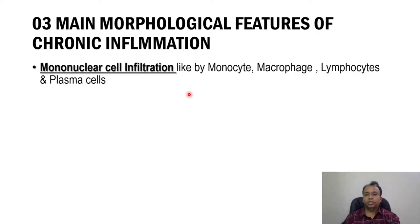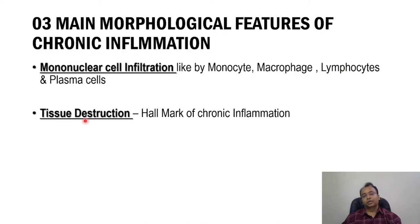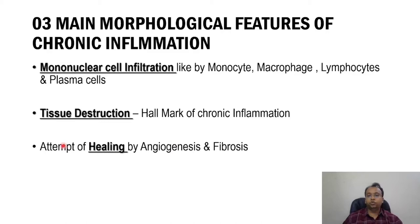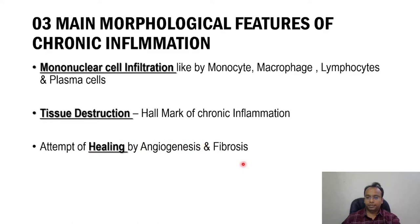Among those, the most important are macrophage and lymphocyte. The second morphological feature is tissue destruction, which is a hallmark of chronic inflammation. The third morphological feature is that because of tissue destruction, the body tries to repair it — there will be attempts of healing, wound healing. Body tries to heal the destructed tissue by fibrosis and angiogenesis. Fibrosis means filling the defect with collagenous or fibrous tissue replacement.